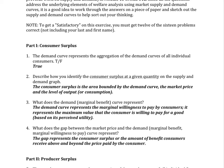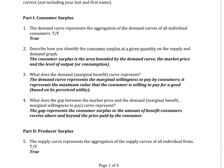Looking at problems 2 and 3, they ask you to describe how you identify the consumer surplus. There's a distinction between 'describe' and 'show on a graph' — it's simply: can you describe via a picture what consumer surplus is? And then similarly for producer surplus. Extending this, I give you a picture of marginal benefit and marginal cost, or supply and demand curves, and can you show me the consumer surplus at a particular price?